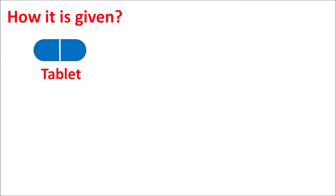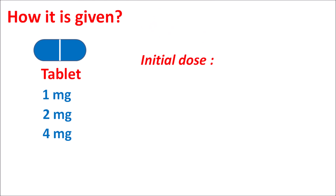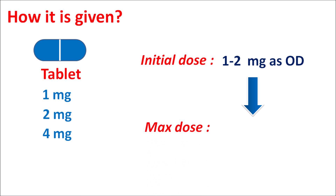This drug is available in tablet form at different strengths such as 1 mg, 2 mg, and 4 mg. The initial dose is variable from 1 to 2 mg given once daily. Since this drug is a long-acting sulfonylurea, it is given as a once daily preparation. The dose can be slowly escalated after 1 to 2 weeks of treatment based on glycemic control, with the maximum dose being 8 mg once daily.